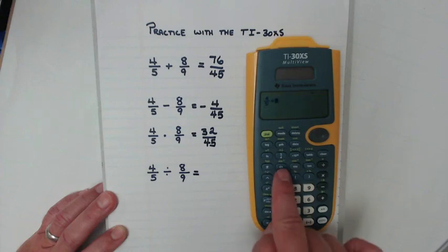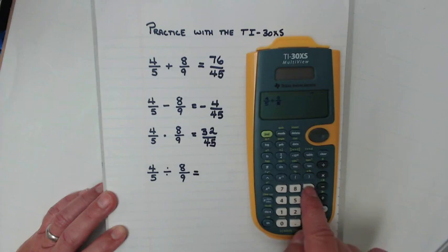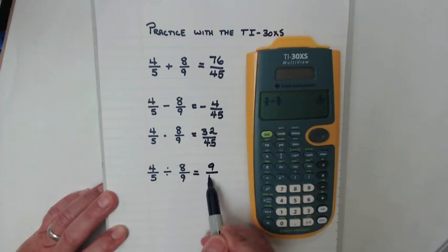Divided by. Fraction button. Eight, move it down. Ninths. And hit enter.